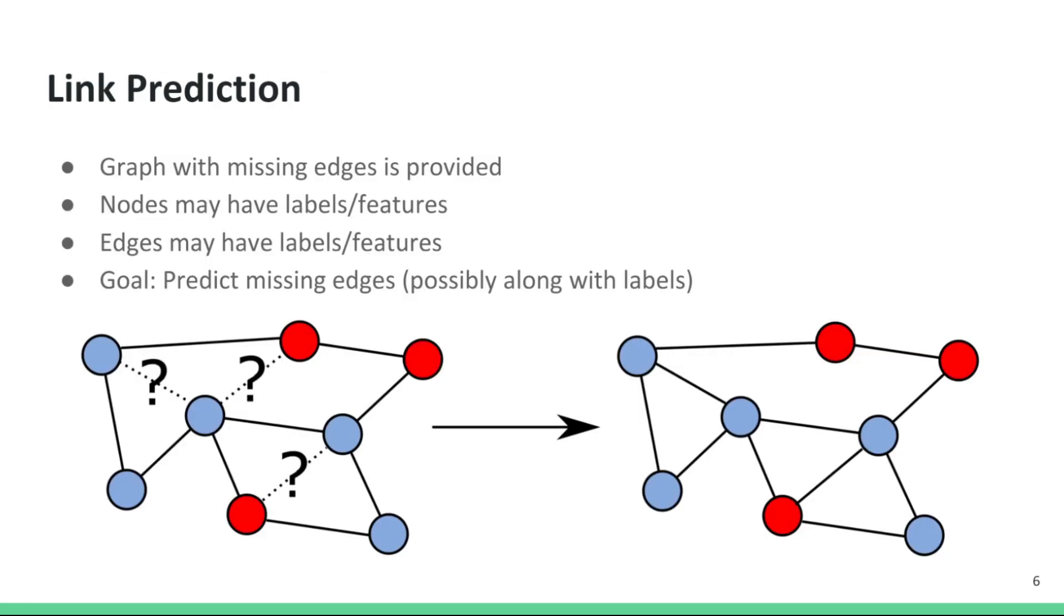Another task on graphs is link prediction, where the goal is to predict the missing edges between the nodes, possibly along with the label on the edge.